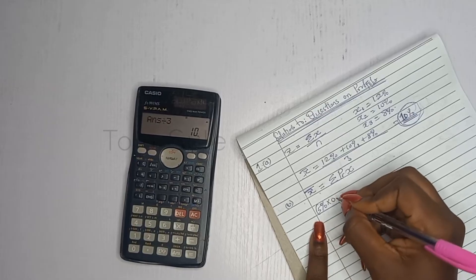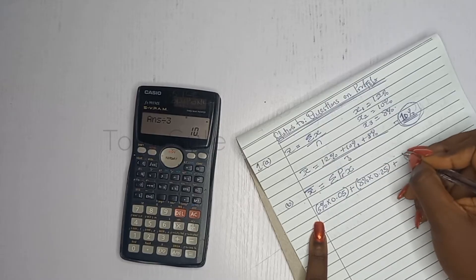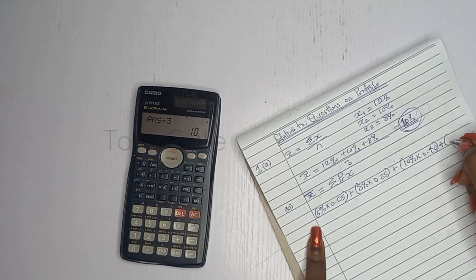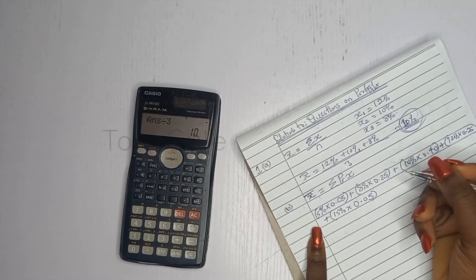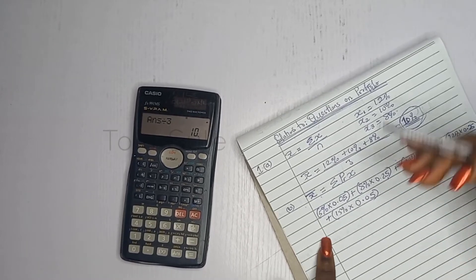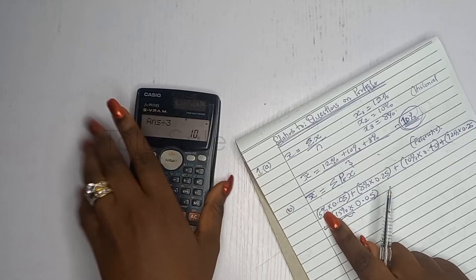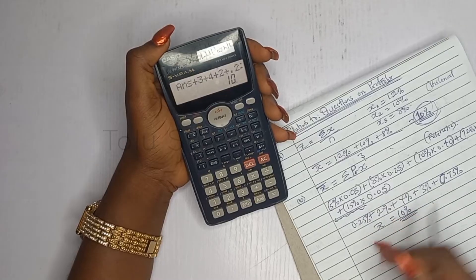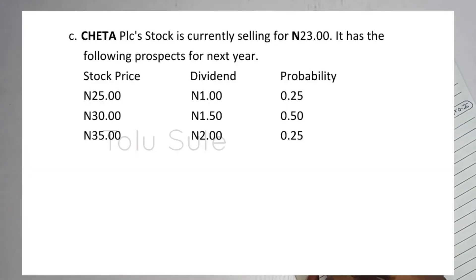You calculate: 5% × 0.05, plus 8% × 0.25, plus 10% × 0.40, plus 12% × 0.25, plus 15% × 0.05. All probabilities add up to 1, and you don't divide by n here. Put this in your calculator and you get 10%. Your expected return on that asset is 10%.